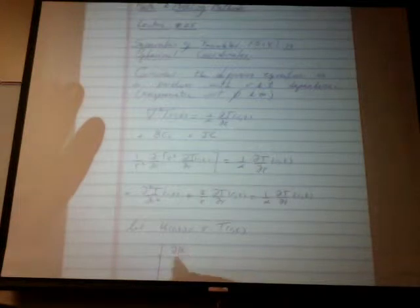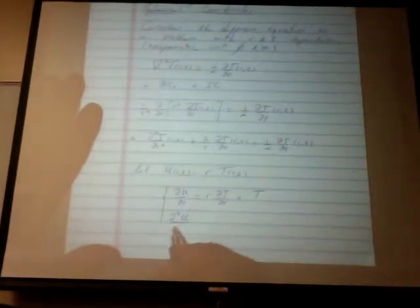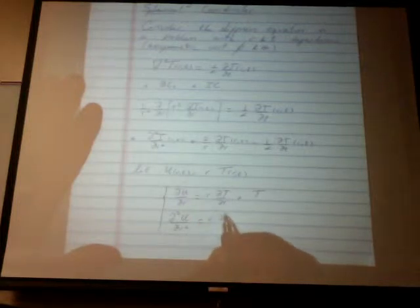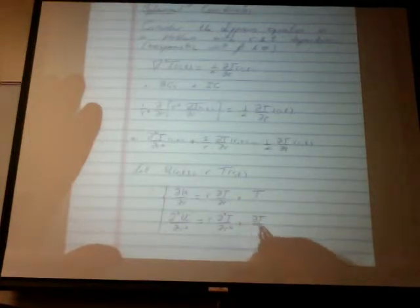With U = R·T, the derivative dU/dR becomes R·dT/dR plus T. The second derivative of U with respect to R-squared becomes R times the second derivative of T plus dT/dR plus dT/dR — we have two of those.